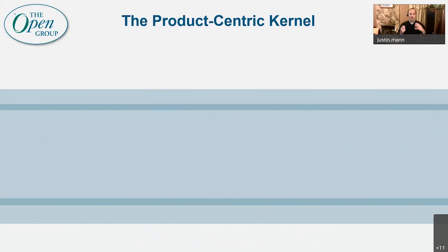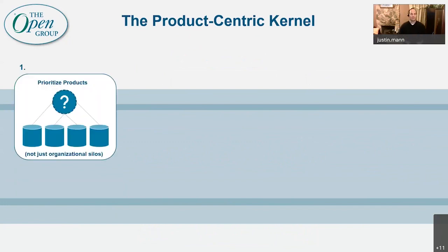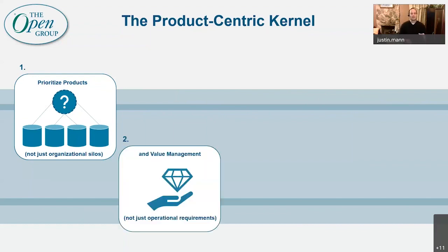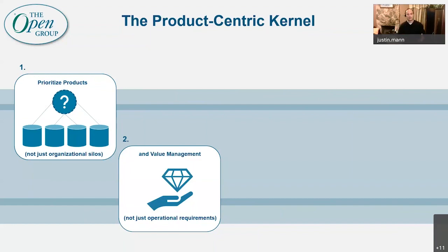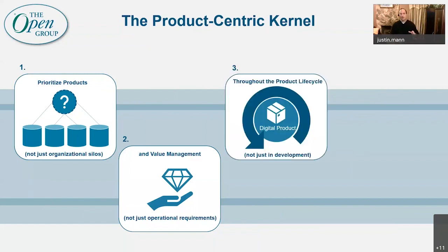So thinking about that product-centric kernel — what is it trying to do differently than the operating models we've defined traditionally? The very first thing was to move the focus to the products themselves that we are delivering and make them the central nervous system for the operating model, not the traditional silos. Number two, we wanted to prioritize holistic value management, not just operational requirements. And number three, we wanted to do that throughout the entire product lifecycle.